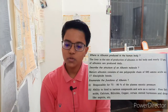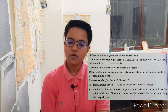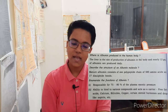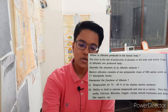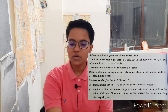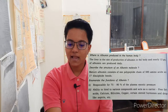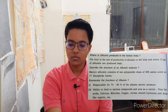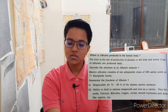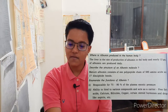Where is albumin produced in the human body? The liver is the site of production of albumin in the body and nearly 12 grams of albumin are produced daily. Describe the structure of an albumin molecule. Mature albumin consists of one polypeptide chain of 585 amino acids and 17 disulfide bonds.